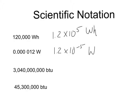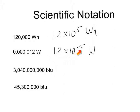The easiest way to remember whether the exponent is positive or negative: if it's a big number and you're converting to scientific notation, the coefficient is getting smaller, so the exponent has to get bigger — it's positive. With a small number, the coefficient is getting larger, going from 12 one-millionths to 1.2, so the exponent has to be negative. Essentially, if you're making the coefficient bigger, you'll end up with a negative exponent.